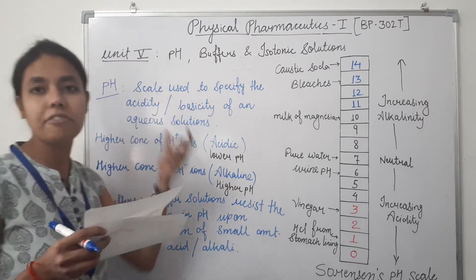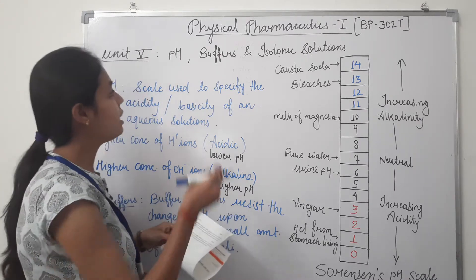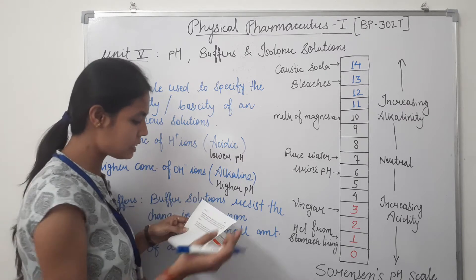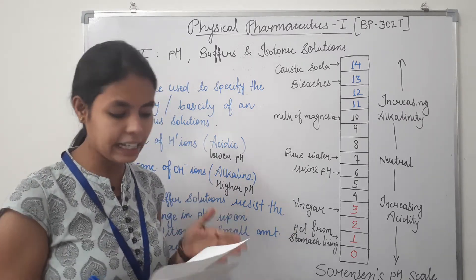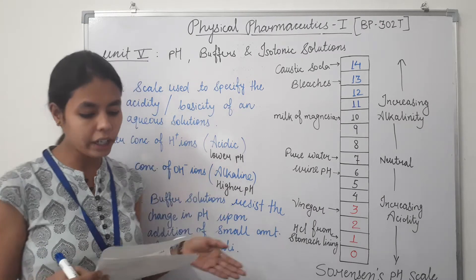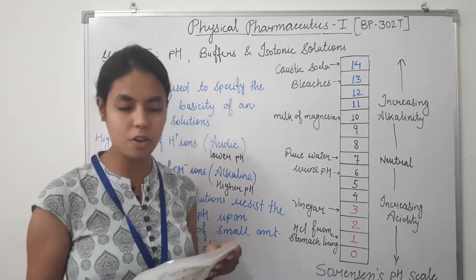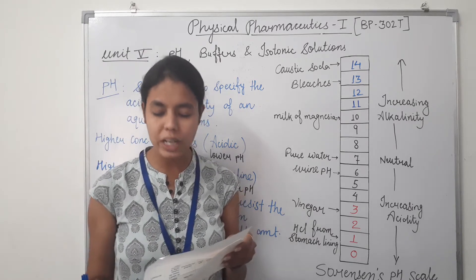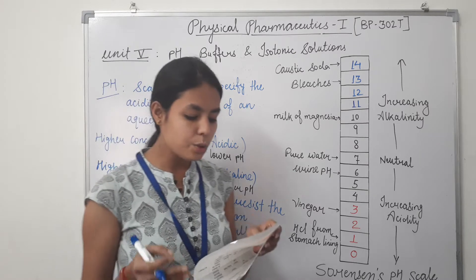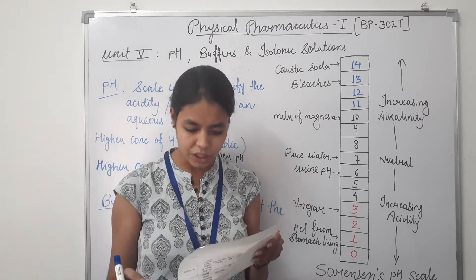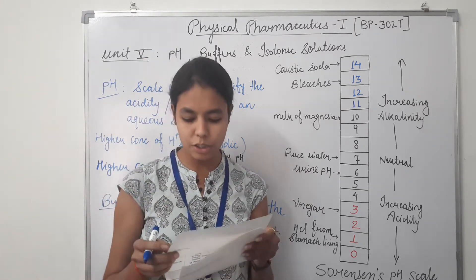Unit 5 comprises pH, buffers, and isotonic solutions. In this particular topic, we will discuss Sorensen's pH scale, pH determination techniques — that is electrometric or colorimetric technique. Apart from that, we will also discuss the application of buffers, buffer equation, buffer capacity, buffers and their use in pharmaceutical and biological systems, and buffered isotonic solutions.